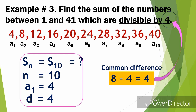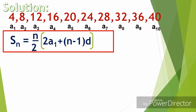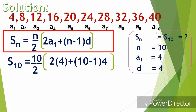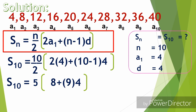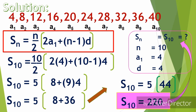Now for the solution, we substitute into the arithmetic series formula. S of 10 equals 10 over 2 times 2 times 4 plus 10 minus 1 times 4. Simplifying: 10 divided by 2 is 5; 2 times 4 is 8; 10 minus 1 is 9; 9 times 4 is 36. So S of 10 equals 5 times 8 plus 36, which is 5 times 44. Therefore, S of 10 equals 220. The sum of the 10 terms is 220.